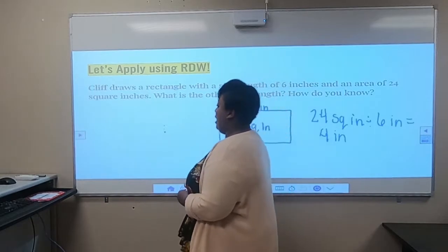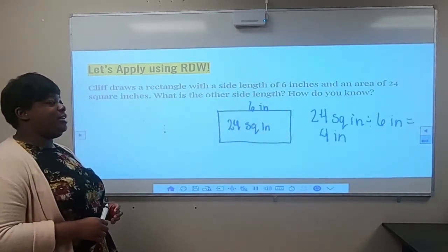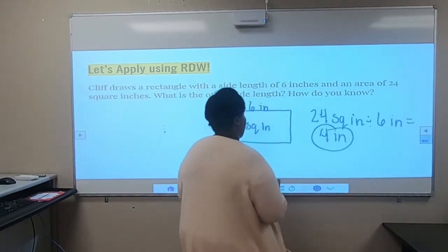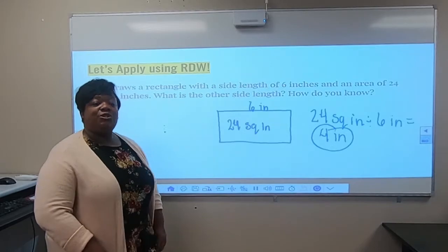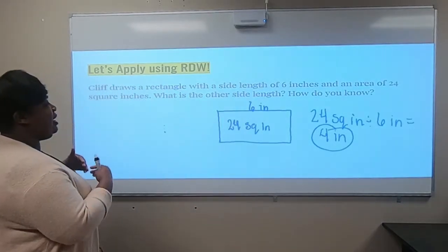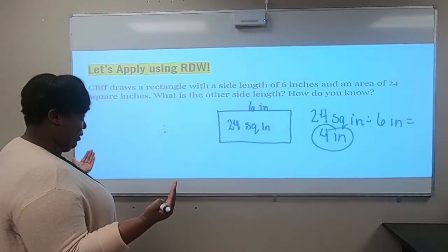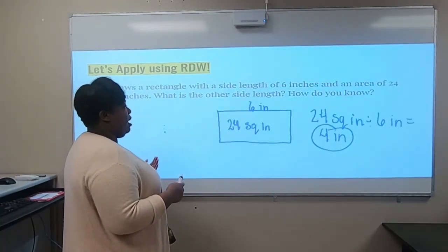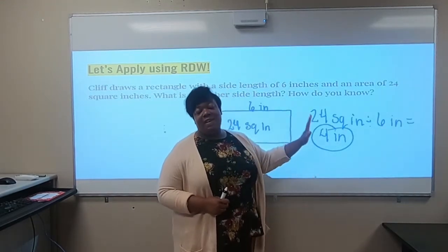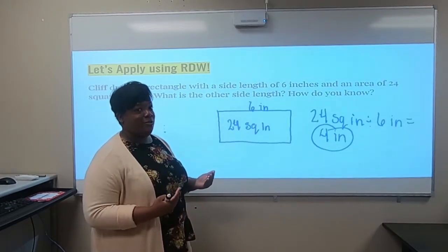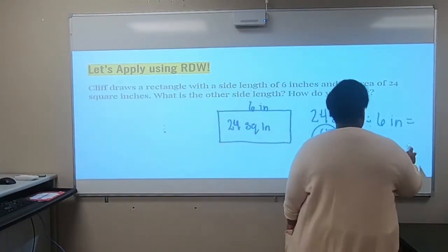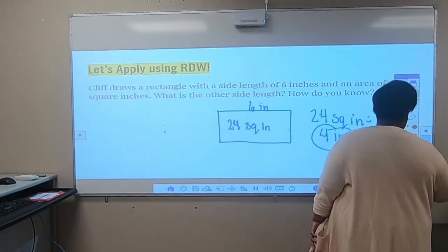The problem asks two questions: what is the other side length, and how do you know? We found that the other side length is four inches. To explain how we know, we say: I know the missing side length is four inches because twenty-four square inches divided by six inches equals four inches. That gives us our missing side.